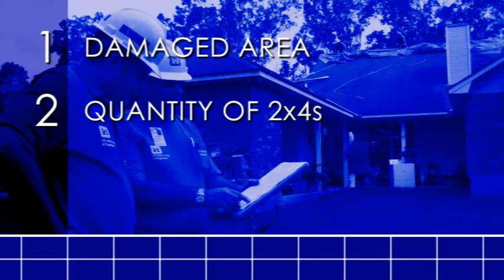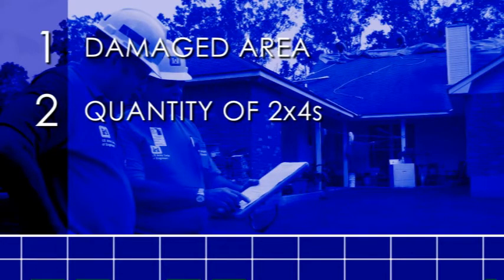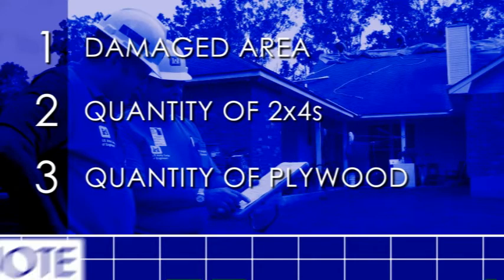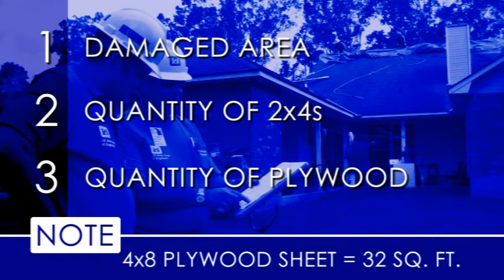The QA should also estimate: the quantity of 2x4s, measured in linear feet, needed to provide temporary repairs to damaged roof structures; and the quantity of plywood, measured in square feet, needed to provide a safe working area. Note: one 4x8 sheet of plywood equals 32 square feet.